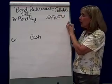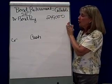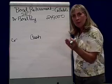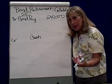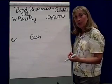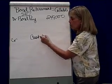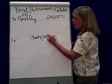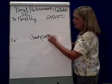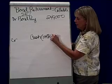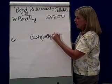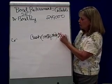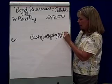So I'm going to debit bonds payable for $240,000. The credit to cash — I'm paying — I have to call them in at a little sweetener, which was 104% of the $240,000. So the amount of cash I have to pay out is $249,600.